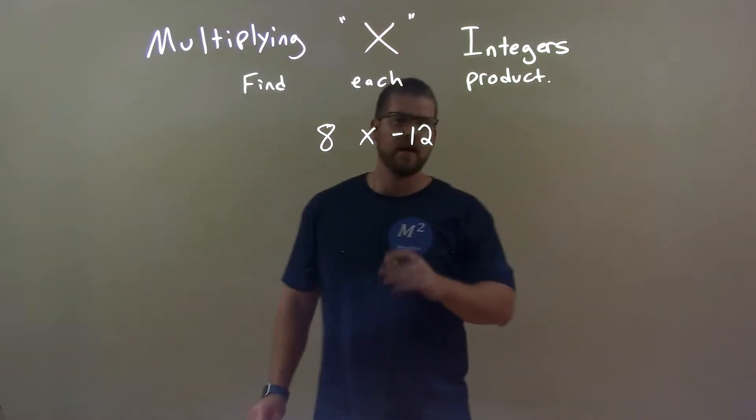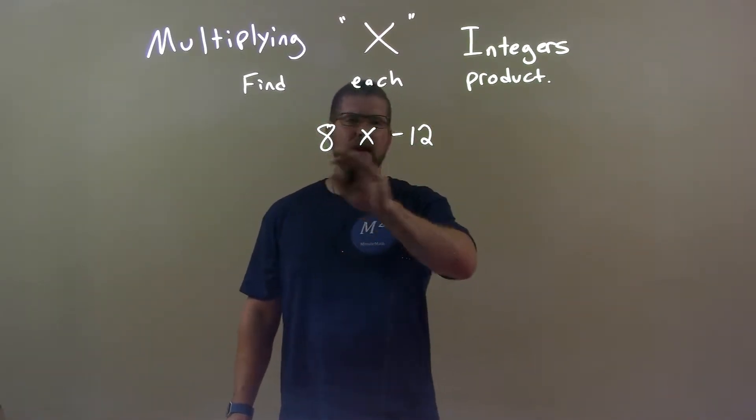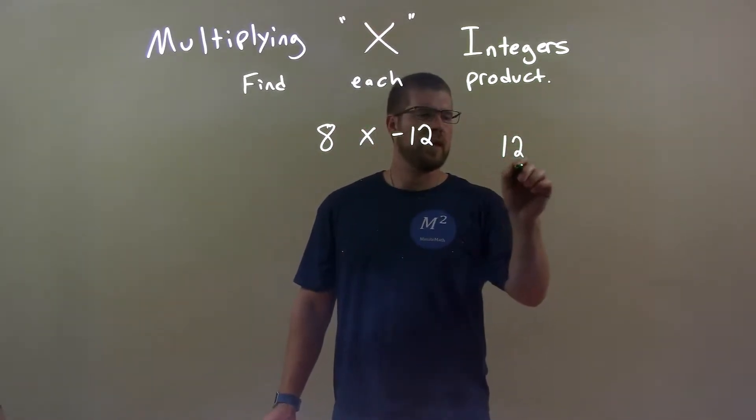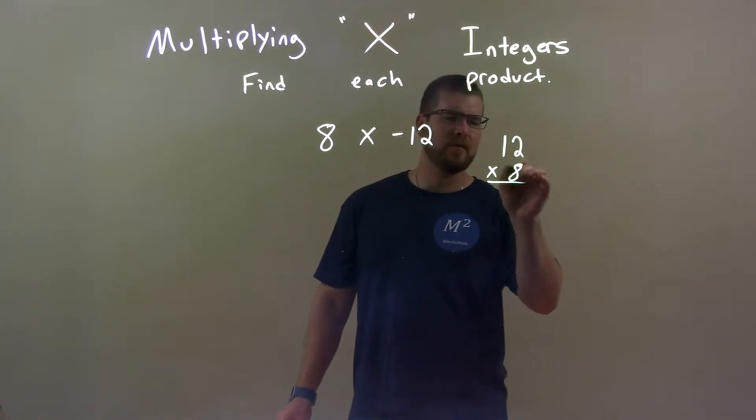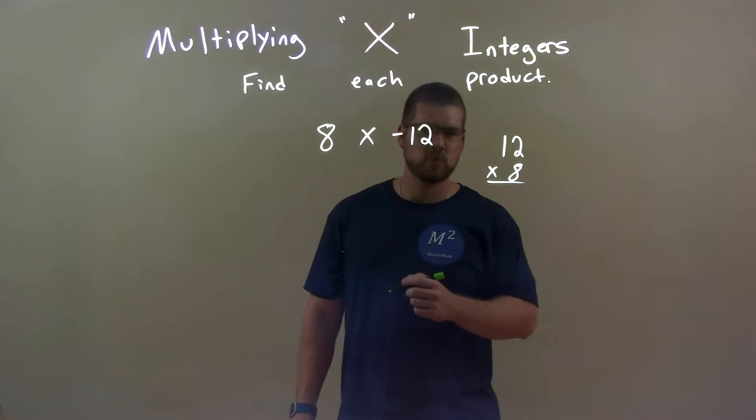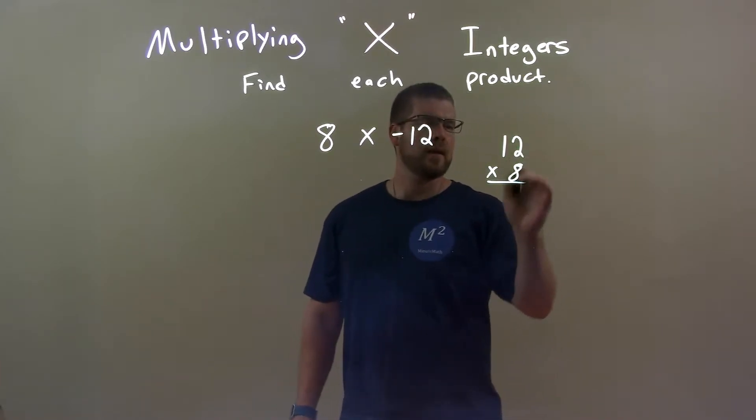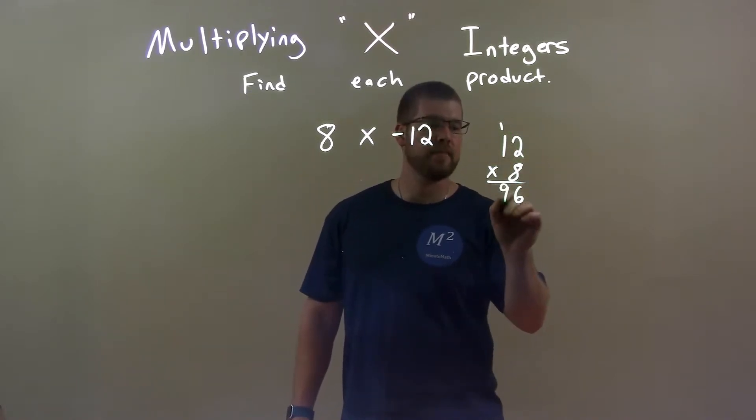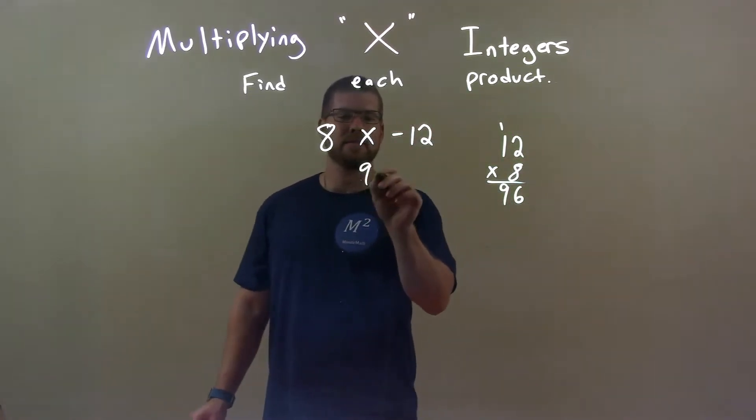Well, the first thing is I ignore the negatives and I think 8 times 12. If we look at it the traditional way, I'll put 8 below 12. 8 times 12, well 8 times 2 is 16, carry the 1, and 8 times 1 is 8 plus 1 is 9. So we have a 96 here.